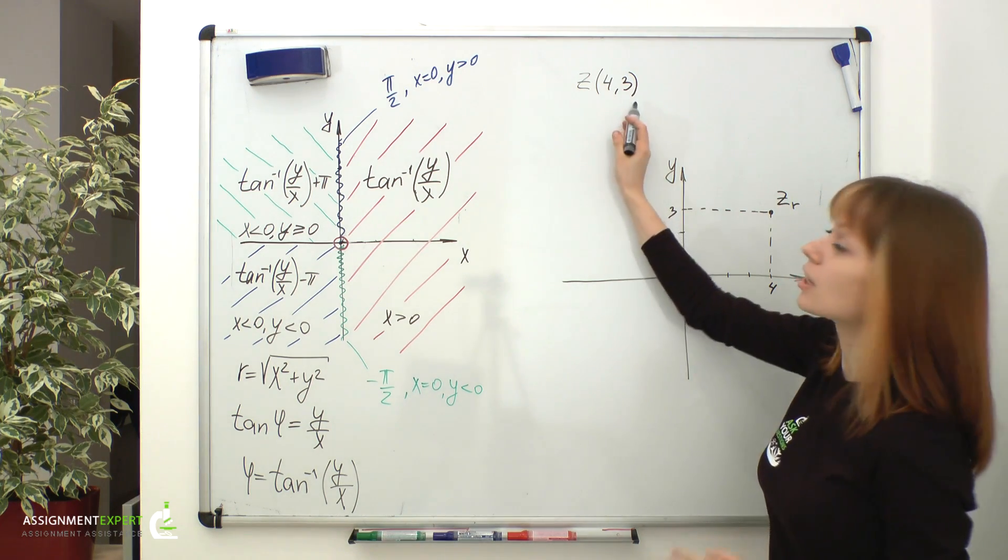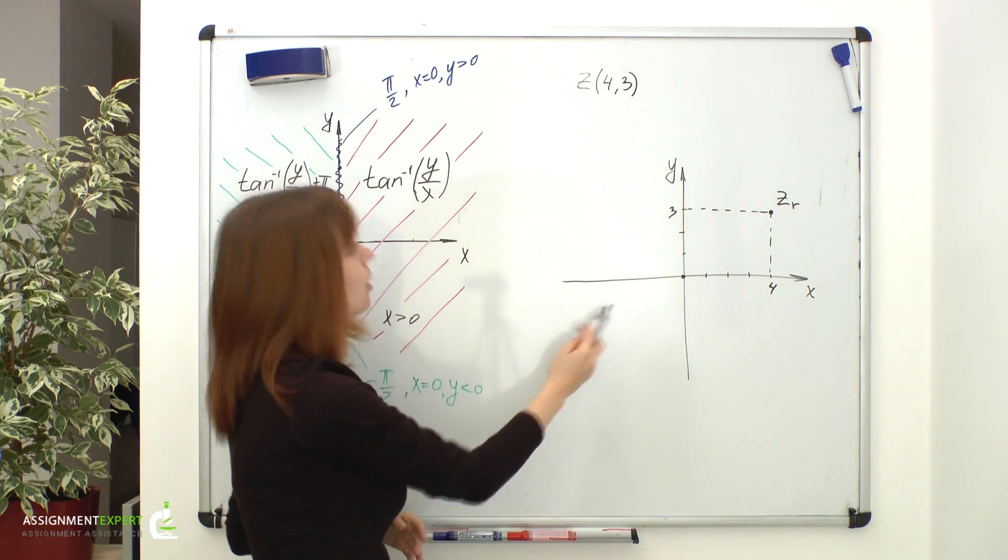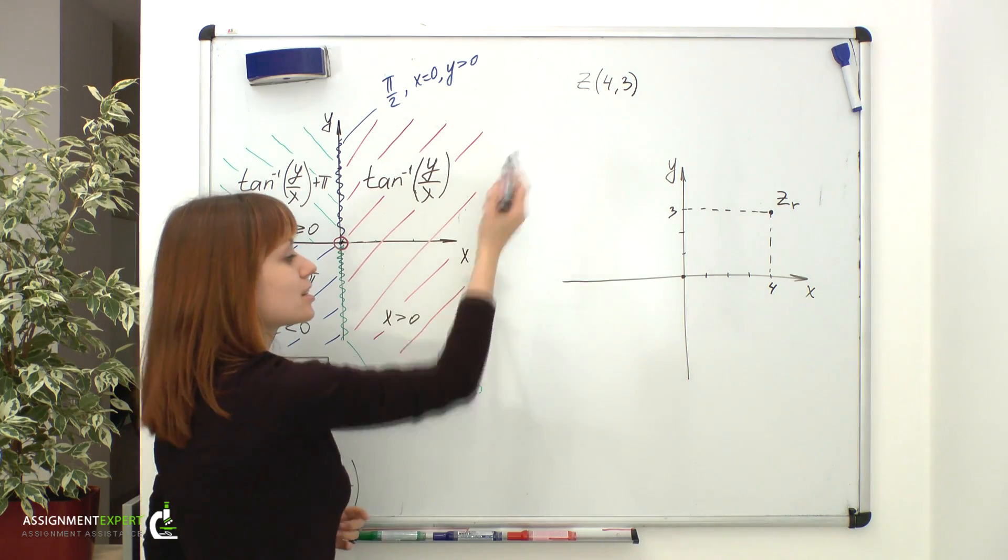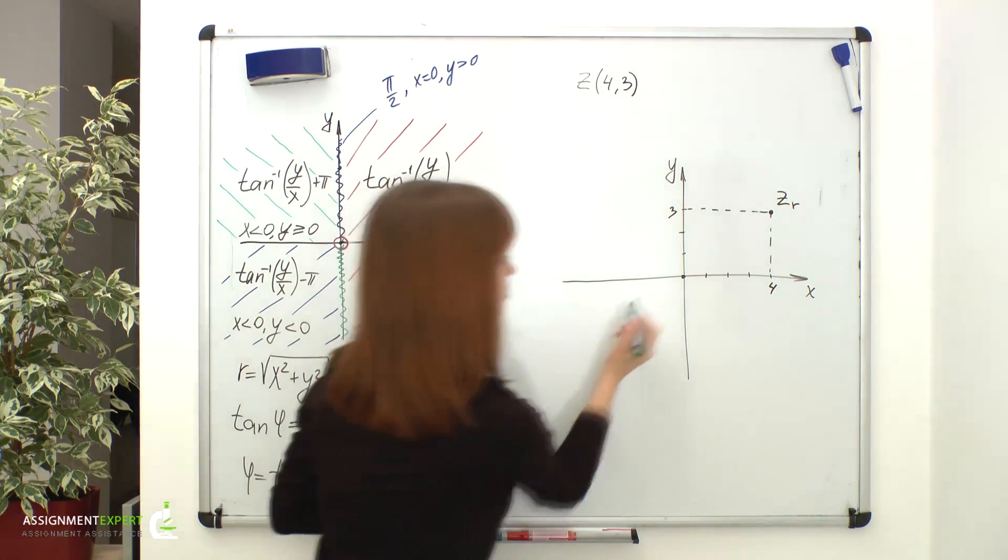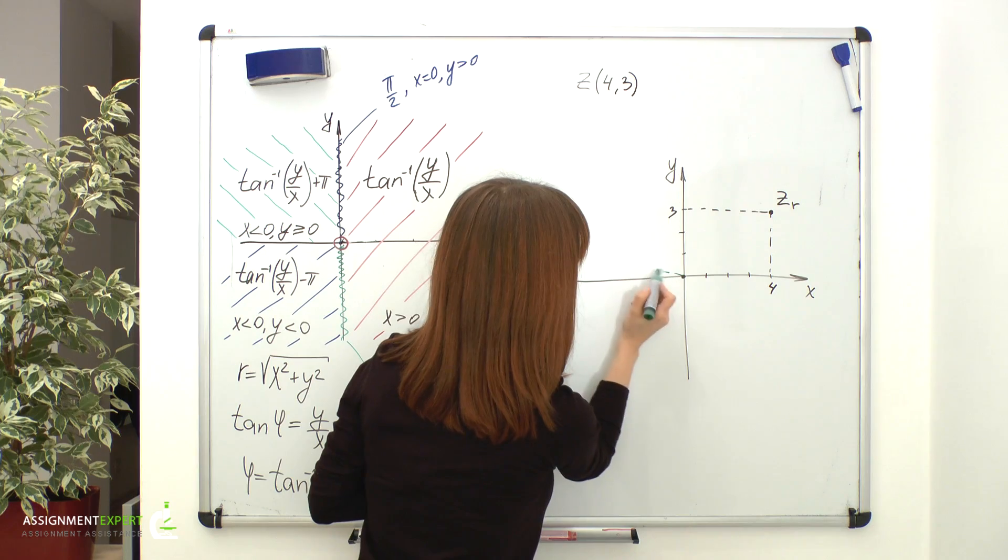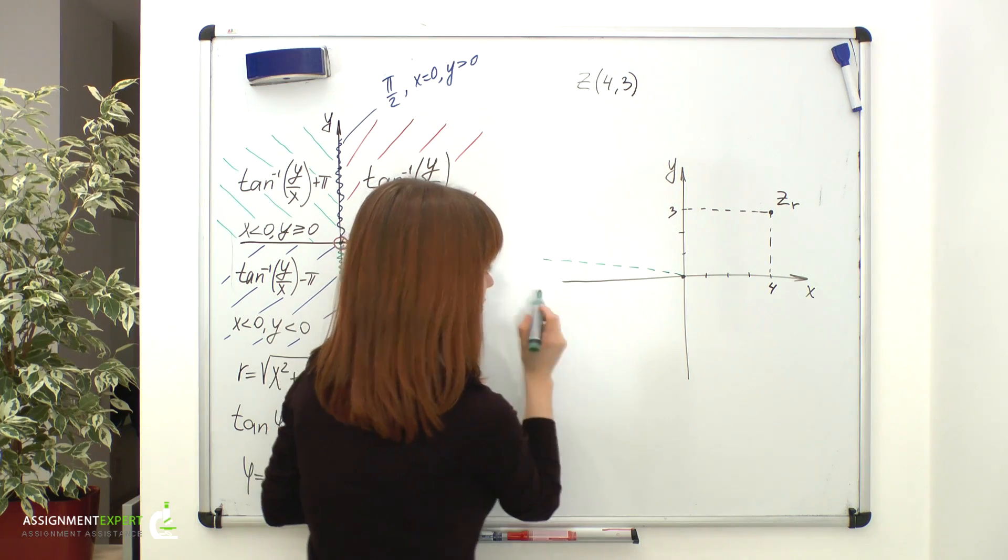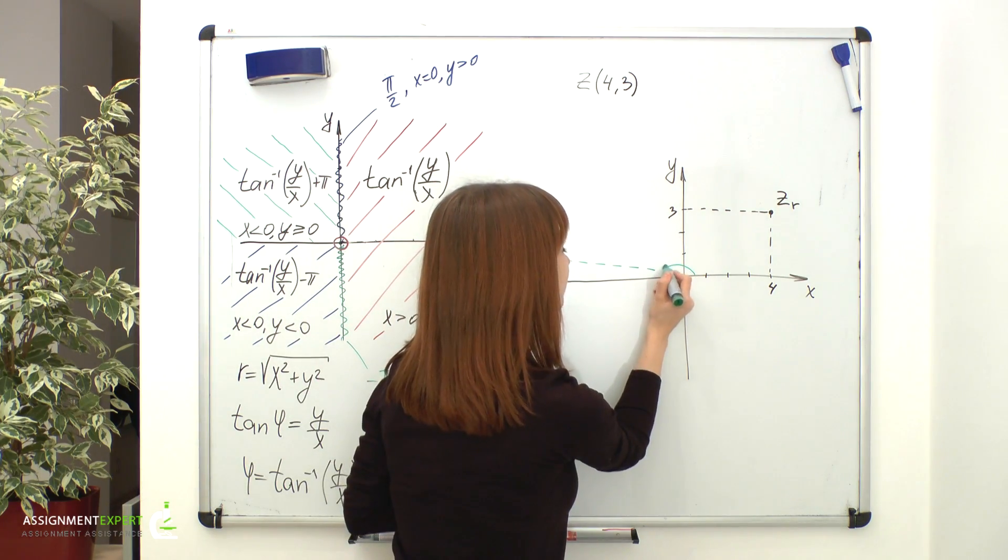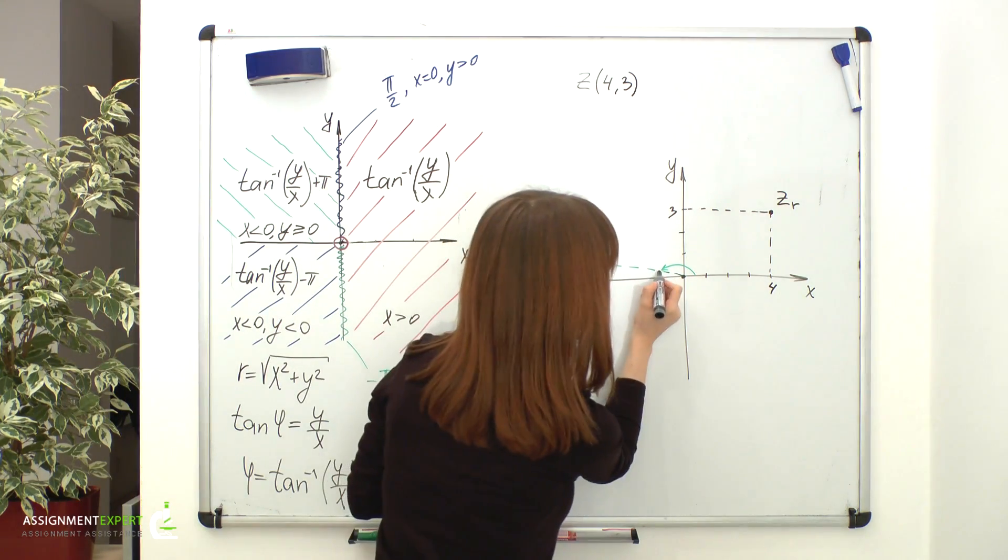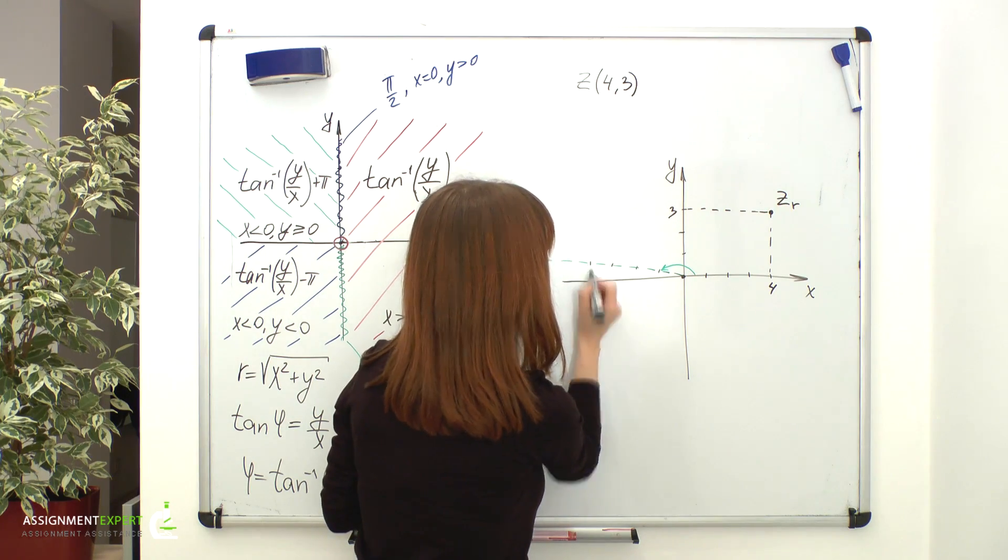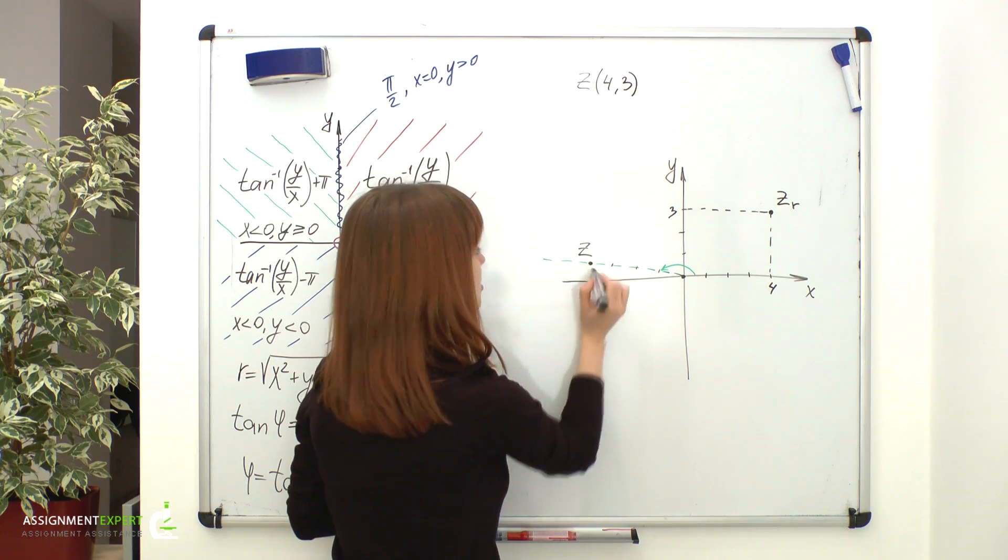But if we were told that 4 and 3 are polar coordinates, it would have meant that 4 is the distance from z to the origin, and 3 is the value of an angle between this radius vector and the x-axis given in radians. So let's find this point. Here we have the angle approximately of 3 radians, a little less than pi, and then one, two, three, four units away from the origin. So here is our point, and let's name it as z polar.